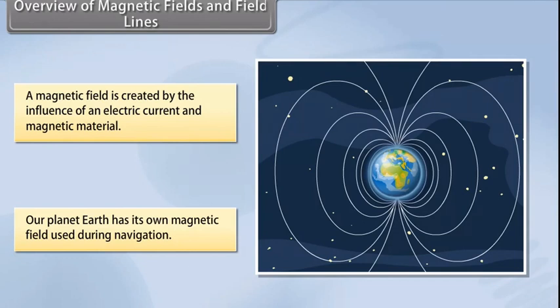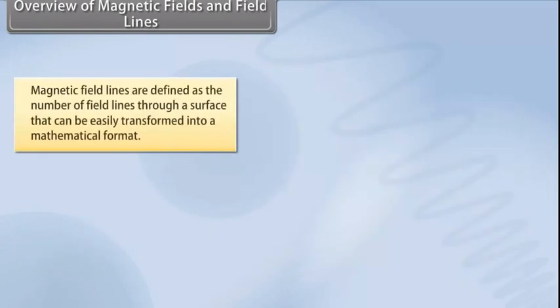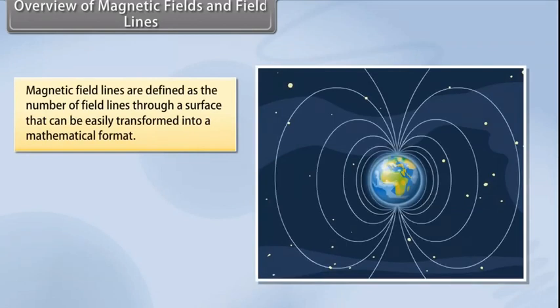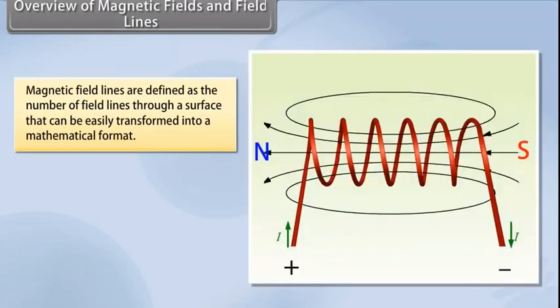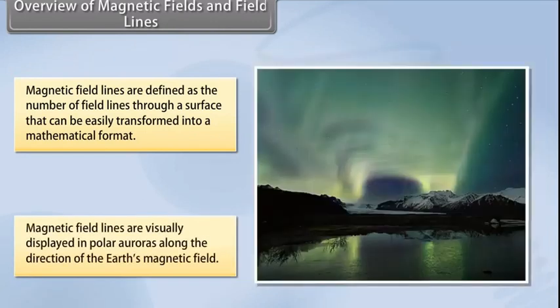Magnetic field lines can be compared to the constant altitude lines that are visible on a map. Magnetic field lines help in stating simple concepts of magnetism easily. These are defined as the number of field lines through a surface and can be easily transformed into a mathematical format. Magnetic field lines are visually displayed in polar auroras where visible streaks of lines are created along the direction of Earth's magnetic field.